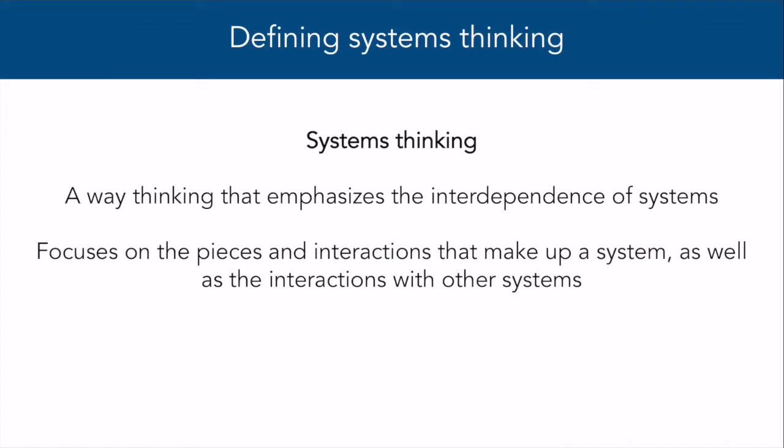At some point in your chemistry education, you might ask yourself, how does organic chemistry influence biology, or how does organic chemistry influence our economy and our society? Systems thinking is a way of thinking that emphasizes the interdependence of systems. With systems thinking, we can focus on the pieces that make up a system, but we can also focus on the interactions between systems, or the interactions within the system between the system's components.